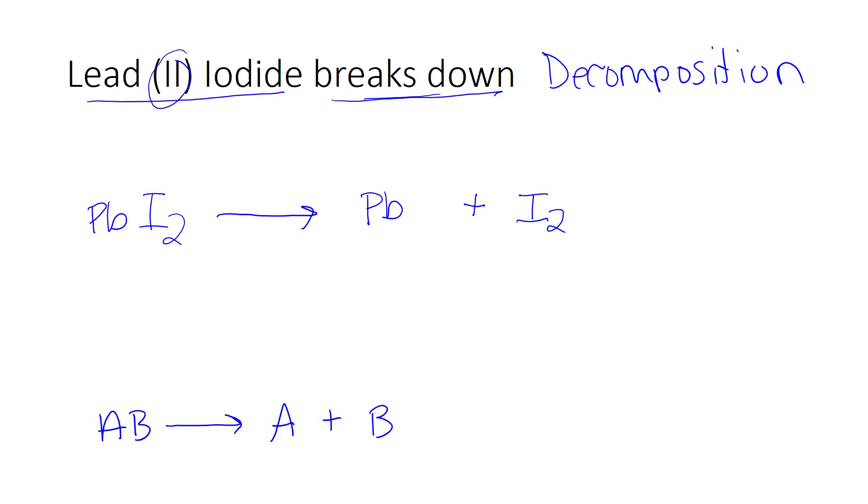The last step is to balance the equation. I'm going to draw a line between my reactants and my products and start looking at each individual element. I have one lead here and one lead here. Those are balanced, no coefficient necessary. Two iodines on the reactant side and two iodines on the product side. So I don't actually need any coefficients. This is balanced just the way it is. We never put the number one in front because we assume you have at least one of each of those that are present.